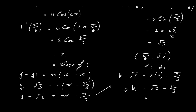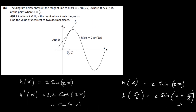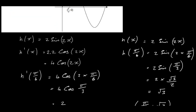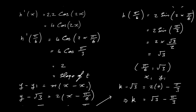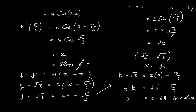Evaluating on a calculator, k equals root 3 minus pi over 3, which gives 0.68 to two decimal places. So k to two decimal places is 0.68, and that's it for this question.